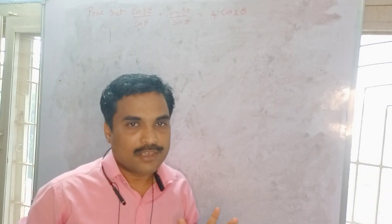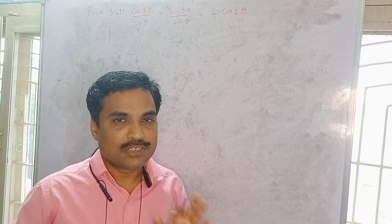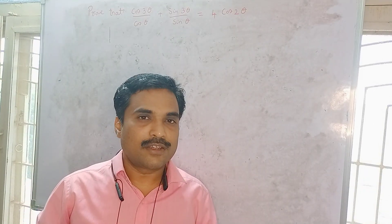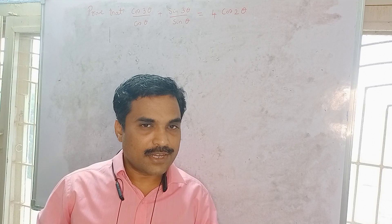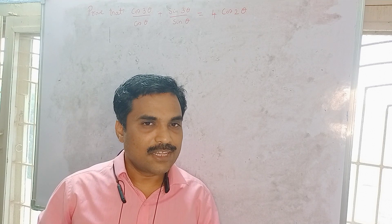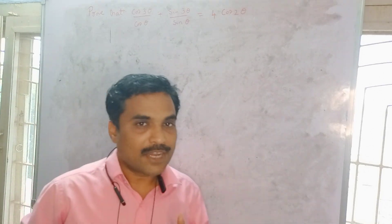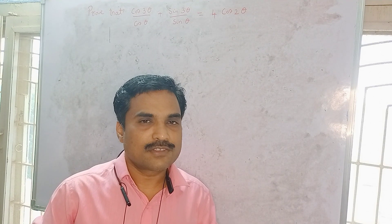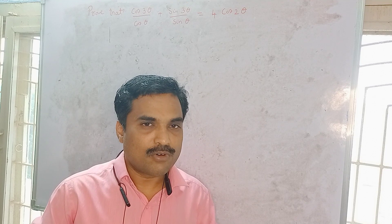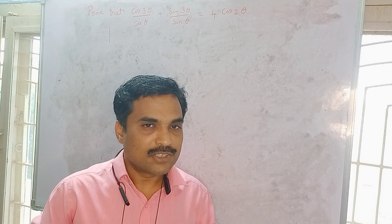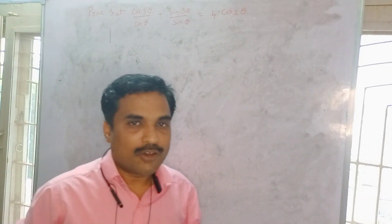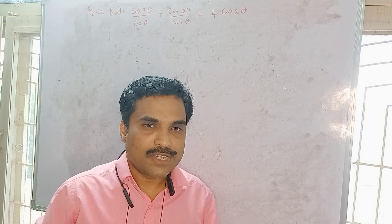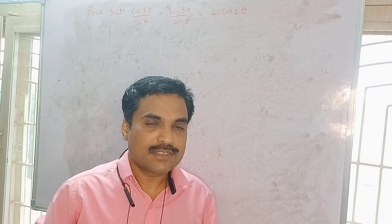To simplify this problem we are going to use three formulas. The first formula is sin 3θ: sin 3θ = 3sinθ − 4sin³θ. The second formula is cos 3θ: cos 3θ = 4cos³θ − 3cosθ. The third formula is cos 2θ: cos 2θ = cos²θ − sin²θ.